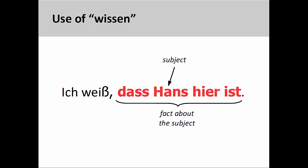The verb Wissen, however, can only be used with facts. The sentence on the screen illustrates this point: 'Ich weiß, dass Hans hier ist' — I know that Hans is here. Although Hans is still the subject of the subordinate clause, additional information has been provided. It is this information — the fact that Hans is present — that is known.